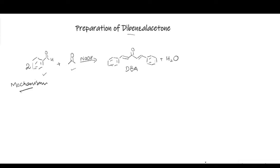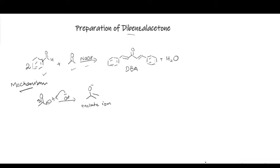An enolizable carbonyl or ketone means that it is a carbonyl group that contains hydrogen attached to the alpha carbon, which can be abstracted by the base to form an enolate. If you look at benzaldehyde, it does not have any hydrogen attached to the alpha carbon, so it is a non-enolizable carbonyl group. What will happen when we react these two with the base is that the enolizable carbonyl — acetone — will react with sodium hydroxide, and the base will abstract the alpha hydrogen, forming an enolate.